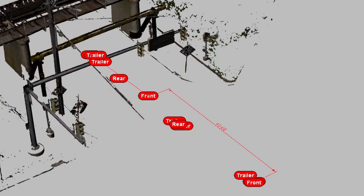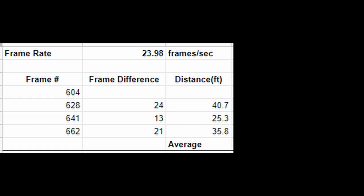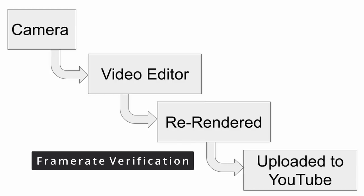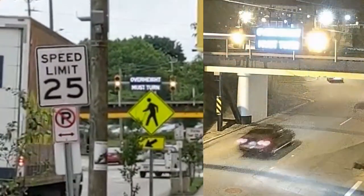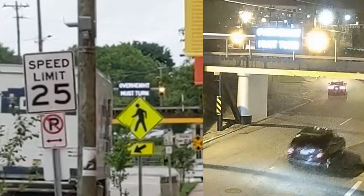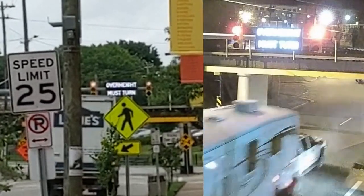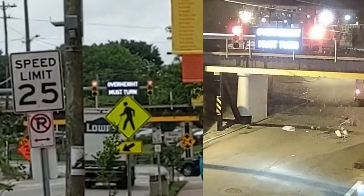Since we have the distance and the time, we can calculate the speed. Before that, I need to verify that the frame rate of 23.98 frames per second is correct. There is an unknown chain of custody here — the camera recording the incident, the video being downloaded off the camera, loaded into video editing software, then re-rendered, then uploaded to YouTube. It is possible one of those steps changed the speed of the video. To check that, I take the video I took when scanning the scene and time how long it took for the light to change from yellow to red — a bit over 3 seconds — which is the same I got for the subject video, verifying that 23.98 frames per second is correct.